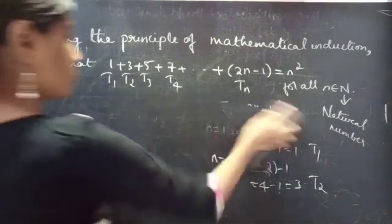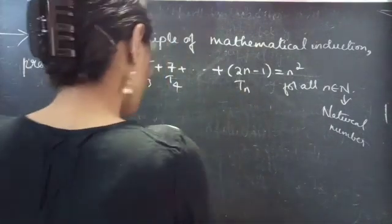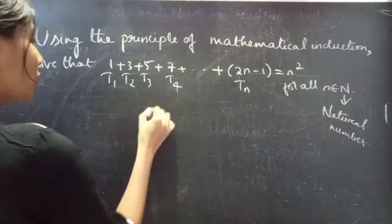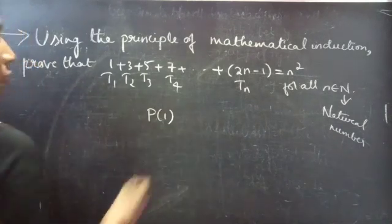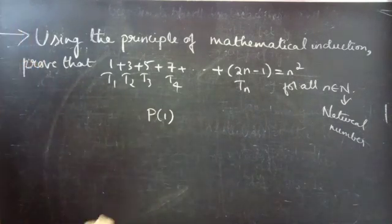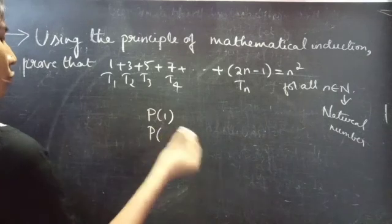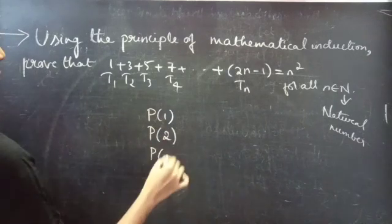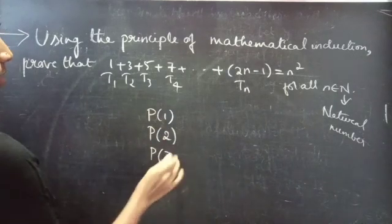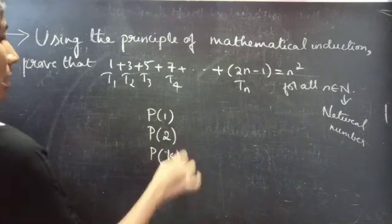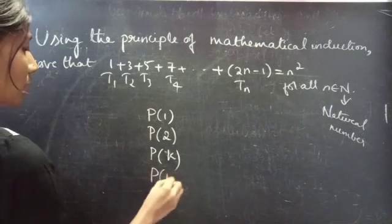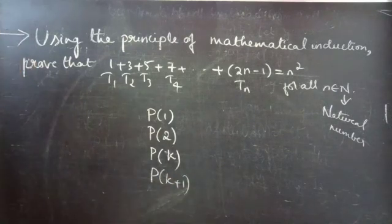Now, coming to the principle of mathematical induction. In this, we will firstly prove that the statement is true for n equals to 1, and if you want, you can prove for n equals to 2. We will assume that the statement is true for some k which belongs to natural numbers, and finally, we will show that the statement is true for n equals to k plus 1.